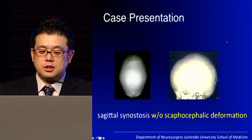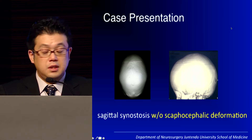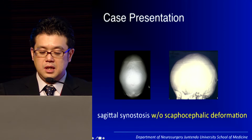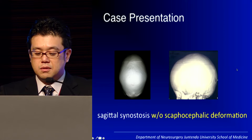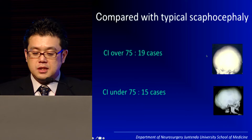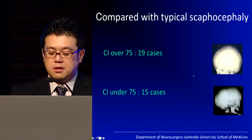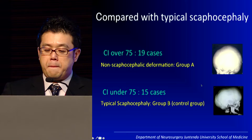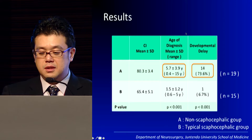I would like to show some cases I think are important. What do you see in this picture? It's not really scaphocephaly, but we see a sagittal synostosis. We define this as sagittal synostosis without scaphocephaly deformation. We collected 19 cases with a cephalic index over 75 and compared this group with the typical scaphocephaly group. The non-scaphocephaly group has been diagnosed later.